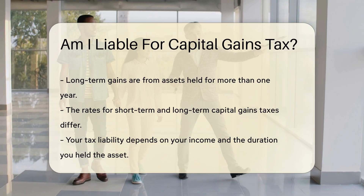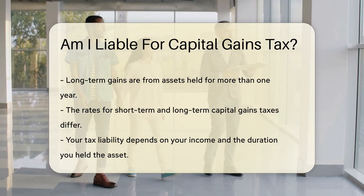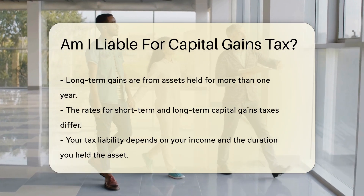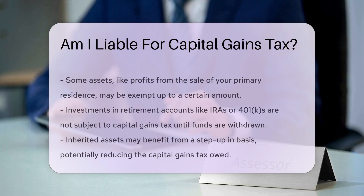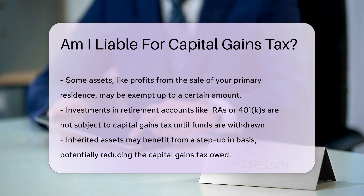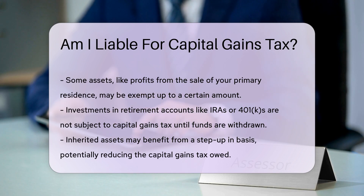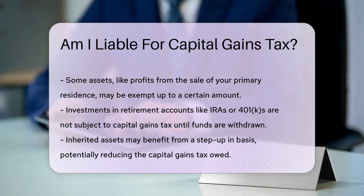Some assets are exempt from capital gains tax. For example, profits from the sale of your primary residence may be excluded up to a certain amount. Certain investments in retirement accounts like IRAs or 401(k)s are not subject to capital gains tax until you withdraw the funds. If you inherit an asset, you may benefit from a step-up in basis, which can reduce the capital gains tax owed.